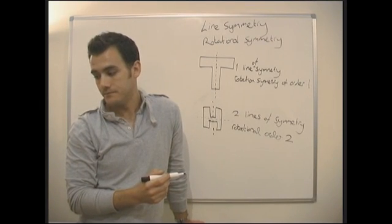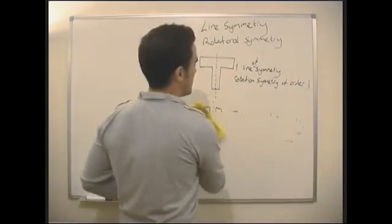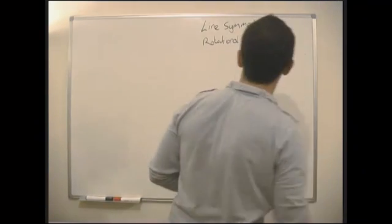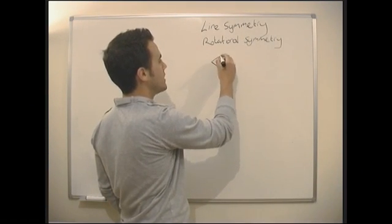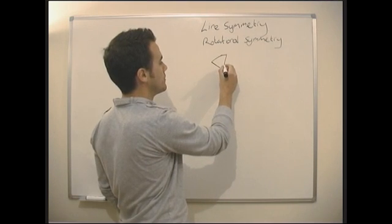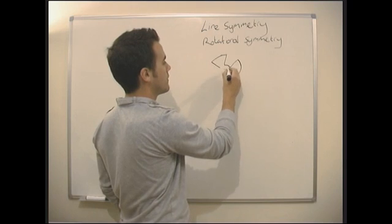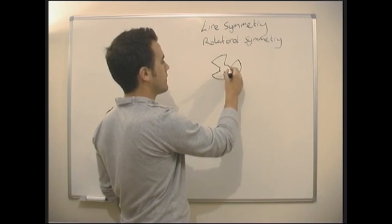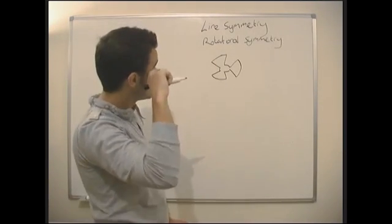Okay. So let's look at two more shapes, and we'll see what they've got, and then you can practice some questions. So we've got a triangle that has a sort of warning shape. Got that. Okay. How many lines of symmetry does that have?